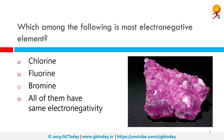Which among the following is the most electronegative element? The correct answer is chlorine. Electronegativity is an atom's relative ability to attract an electron pair in the formation of a covalent bond. Across the periodic table from left to right, electronegativity increases due to increased attraction forces between the nuclear charge and outer electrons. Down the periodic table from top to bottom, attraction forces decrease, making it easier for electrons to be stolen. Chlorine is the highest and furthest to the right, making it the most electronegative.